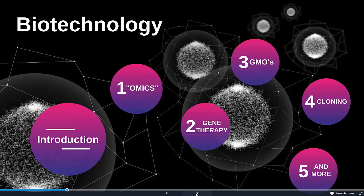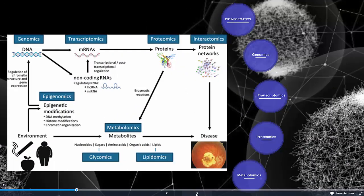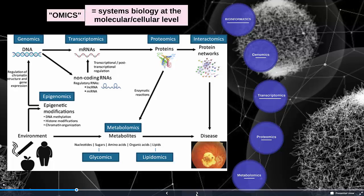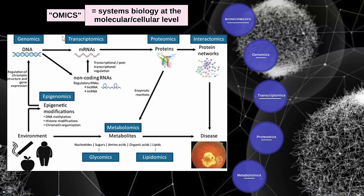Our first topic is omics, which refers to looking at different levels of cell and molecular biology and specifically how they're all interconnected. We have genomics, transcriptomics, proteomics, and metabolomics. We'll also talk about epigenetics and the epigenome when we get to genetics.